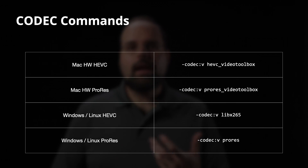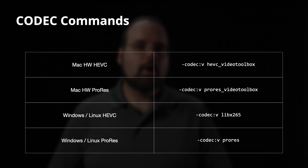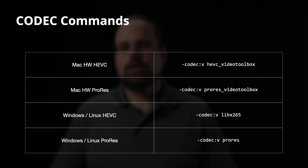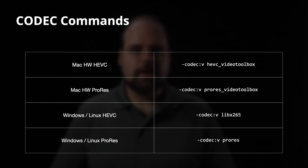FFmpeg does support hardware encoding from AMD, Intel, and NVIDIA, and you could easily substitute that for the software HEVC process we're talking about. But for simplicity's sake, I'm going to stick to the above two on Windows. To tell FFmpeg which codec you want it to use, you use the -codec:v command followed by the codec name — for example, -codec:v prores_videotoolbox or -codec:v libx265.